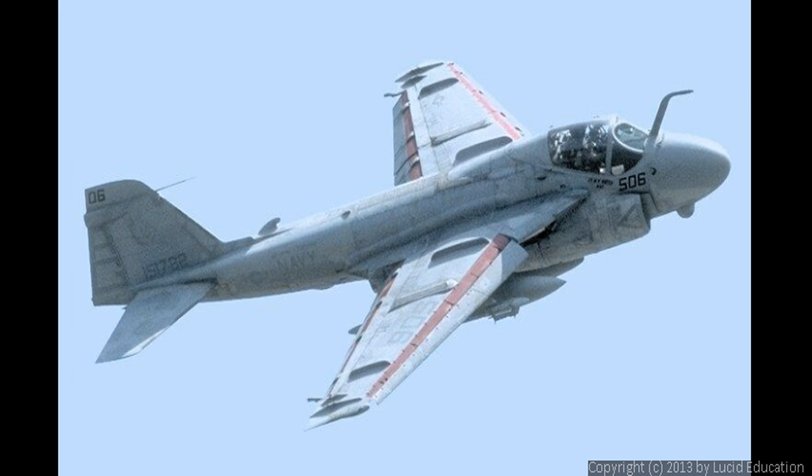This is a picture of an A6 intruder. This was a Vietnam-era combat aircraft. And the thing that you can see very well in this picture is the curvature of the wing. The plane's moving to the right, so you can imagine the wind hitting the wing from the right, moving in this direction relative to the wing. The thing to notice is the curvature of the wing, particularly across the top.